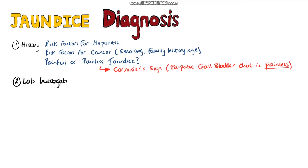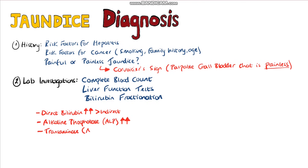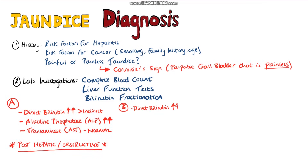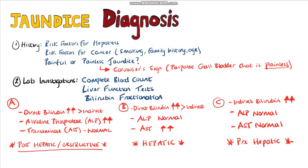Lab investigations would include a complete blood count, bilirubin fractionation, and liver function tests. A particularly elevated direct bilirubin suggests a post-hepatic or obstructive cause, especially if alkaline phosphatases are elevated more so than the transferases. If direct bilirubin is elevated but alkaline phosphatase levels are normal with increased transaminases, it suggests a hepatic cause. Finally, if indirect bilirubin is elevated more than direct bilirubin along with normal liver function tests, we're more likely looking at a pre-hepatic disorder.